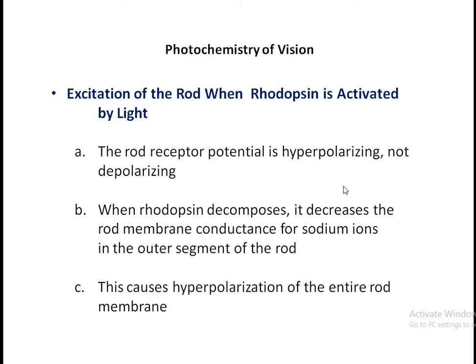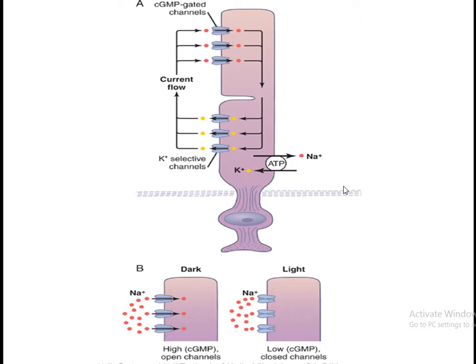These chemical changes lead to an important electrical change in the rod. The rod receptor potential is hyperpolarized — not depolarized. When rhodopsin decomposes, it decreases the rod membrane conductance for sodium ions in the outer segment of the rod, and this causes hyperpolarization of the entire membrane. This figure shows the inner segment and outer segment.